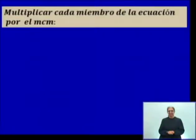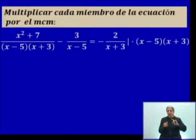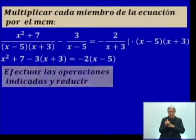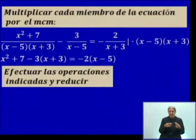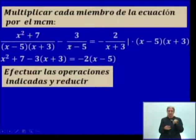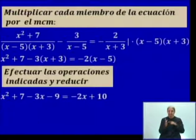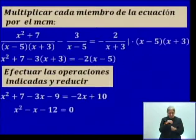Continuamos. Vamos a multiplicar cada miembro de la ecuación por el mínimo común múltiplo, tal y como indiqué. Observen que está la barra indicando la multiplicación. Vamos a efectuar las operaciones indicadas y reducir términos semejantes. Recuerden que hay un signo menos, y por tanto al multiplicar tenemos que tener en cuenta la ley de los signos. Al efectuar obtenemos este resultado en cada miembro. Recuerden que siempre sugerimos reducir primero y transponer después. Y obtenemos ese trinomio, que no es más que una ecuación de segundo grado.